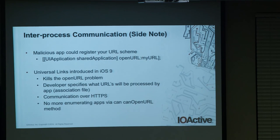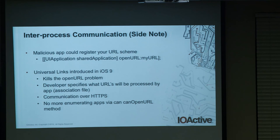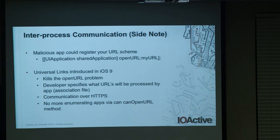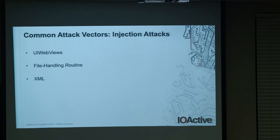With iOS 9, the Skype-style attack vector has been closed because iOS 9 introduced universal links. With universal links, the developer specifies what URLs will be processed by the app, and communication is done over HTTPS. Additionally, prior to iOS 9 you could use the 'canOpenURL' method to enumerate installed applications — iOS 9 addressed this too. This is just another example of common issues being closed. Other attacks include injection into UIWebViews, XML attacks, and so on.